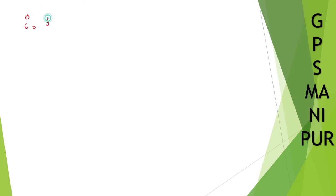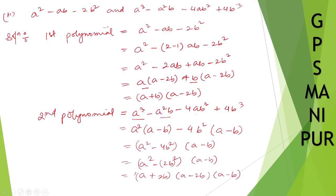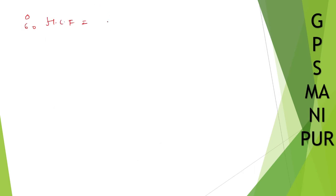Now let's find the HCF. From the first polynomial we have factors (a + b) and (a minus 2b), and from the second polynomial we have (a plus 2b), (a minus 2b), and (a minus b). The only common factor is (a minus 2b), so HCF is equal to (a minus 2b).